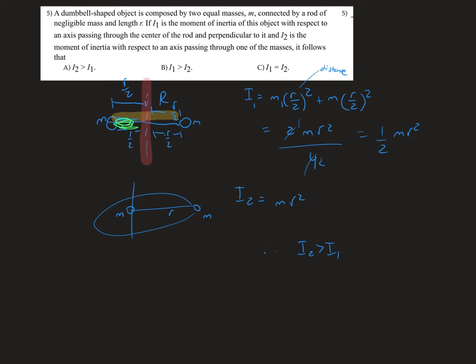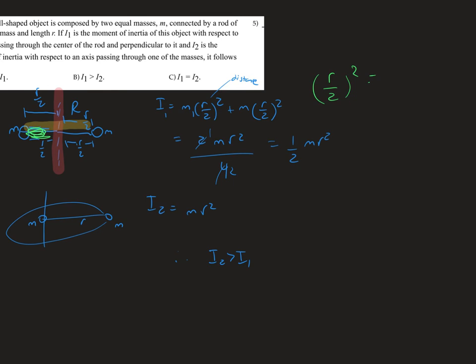Now if you add them up, we're going to get 2mr² divided by 4, divided by 4 because r over 2 squared is r² over 4. That's why we have two of these on top, because they have the same coefficient, mr².